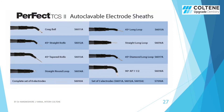Here I have shown images of autoclavable electrode sheets available with Perfect TCS2, which includes a set of 8 electrodes: coagulation bowl, 45-degree straight knife, 45-degree tapered knife, round straight round loop, 45-degree long loop, straight long loop, 45-degree diamond long loop, and 90-degree AP 1½.